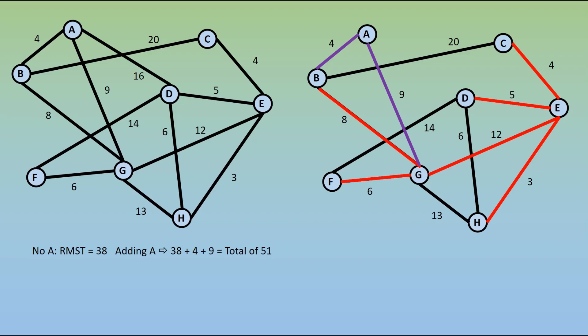We need to do the same process for each of the vertices being missing. To save time in this video, I'm going to simply present the results though. If we don't have B, our residual minimum spanning tree has 39, and we would need to add in a 4 and an 8, which are the two lowest weights going into B. That gives us a total of 51 as well.